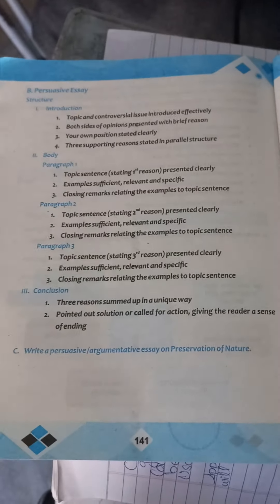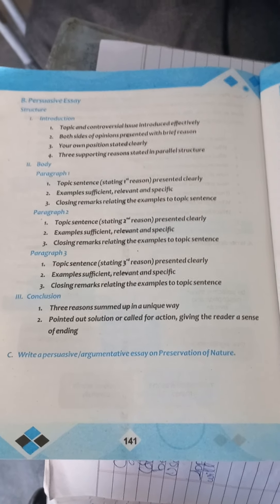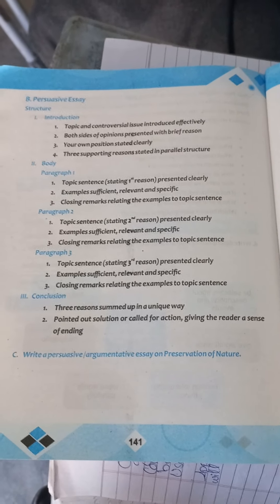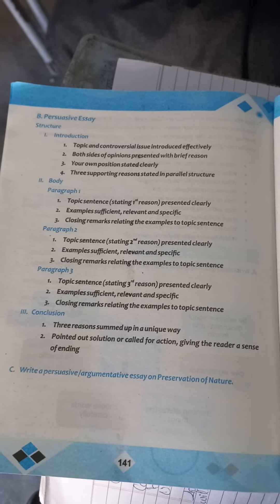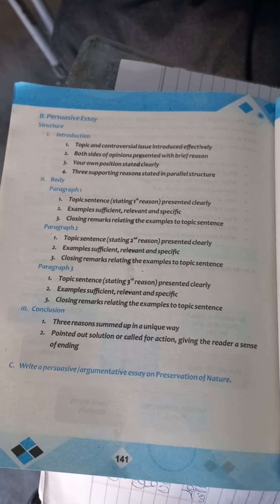Dear students, Assalamu alaikum. Today's topic is page 141 of your class 9th book, which includes writing a persuasive or argumentative essay on preservation of nature. The meaning of argumentative is that you give your points and try to convince the other person that you are right, and persuasive means to persuade a person to listen to or accept whatever you are saying. The essay is on the board and I'll start reading from there.